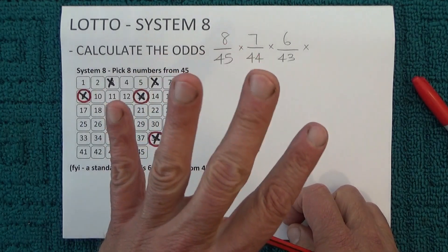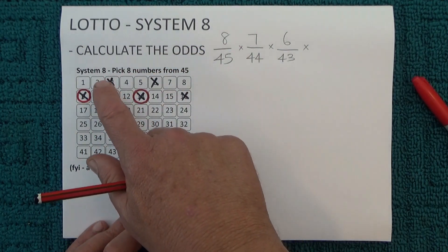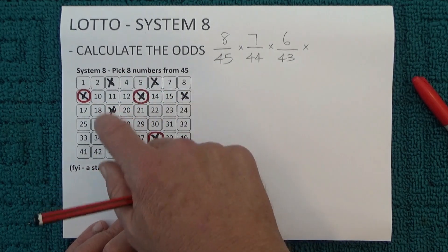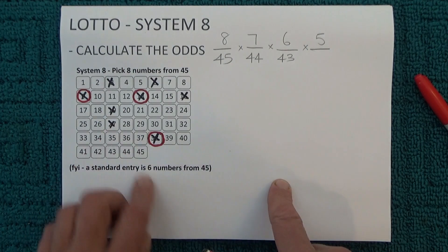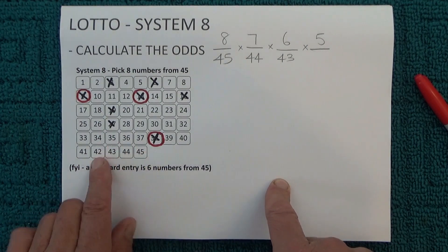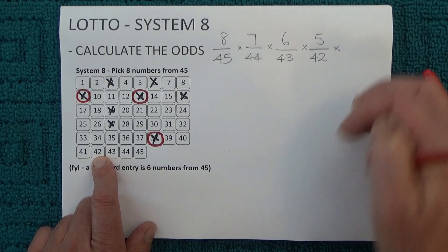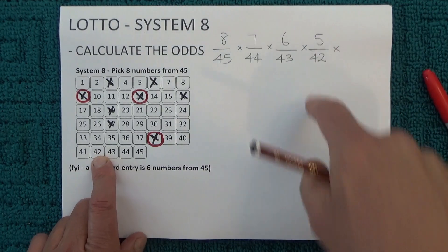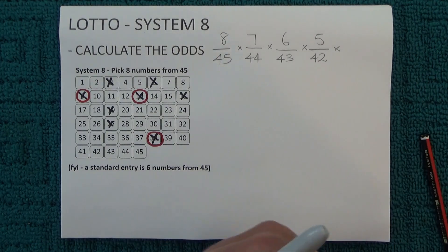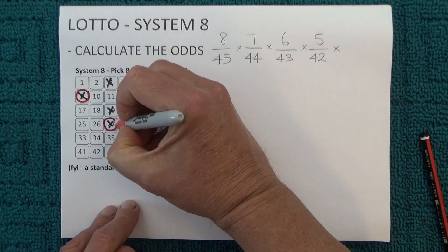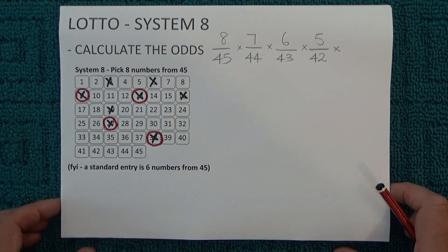Now when the fourth number's drawn, you're left with five chances because you've got five unmatched numbers on your coupon. There are now 42 numbers left in the barrel — three have already been drawn. So you've got five chances in 42 of matching the fourth number that's drawn. And to show one of those numbers has been matched, I'll just randomly mark off one of those numbers.